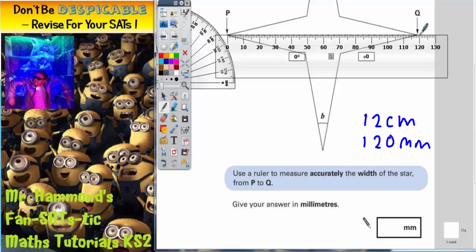Well there's 120 millimeters. 119. 118. It's kind of between 118 and 119. So the exam board would probably give you either of those two.